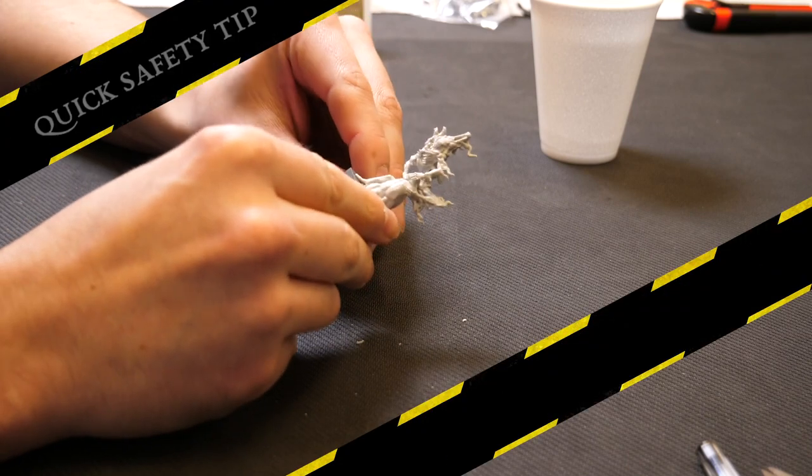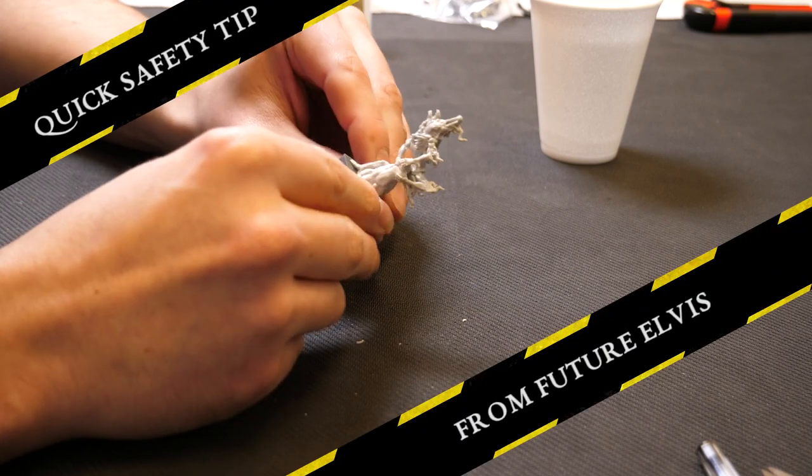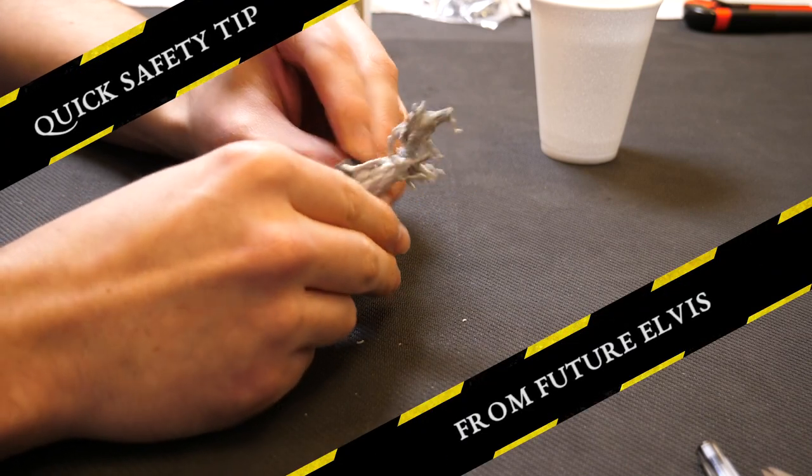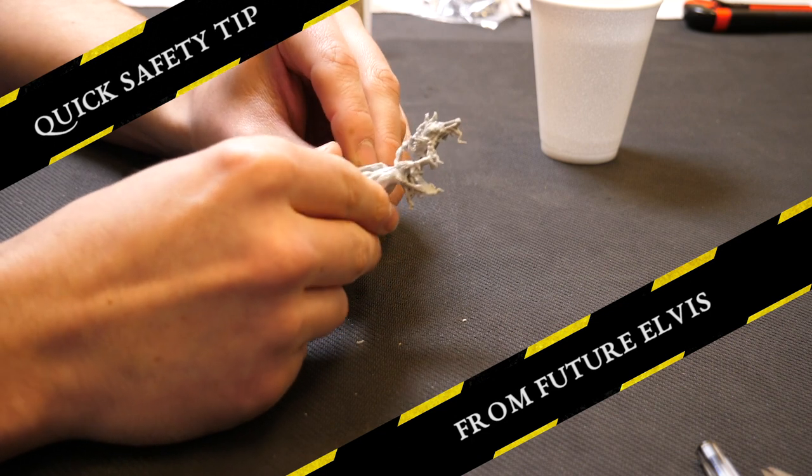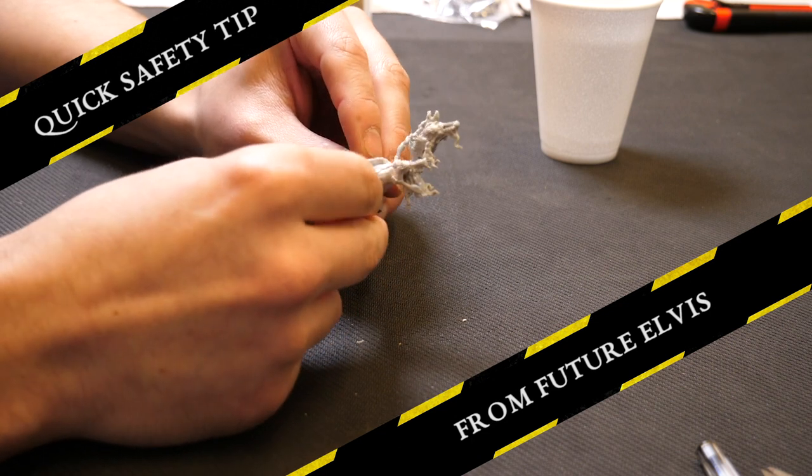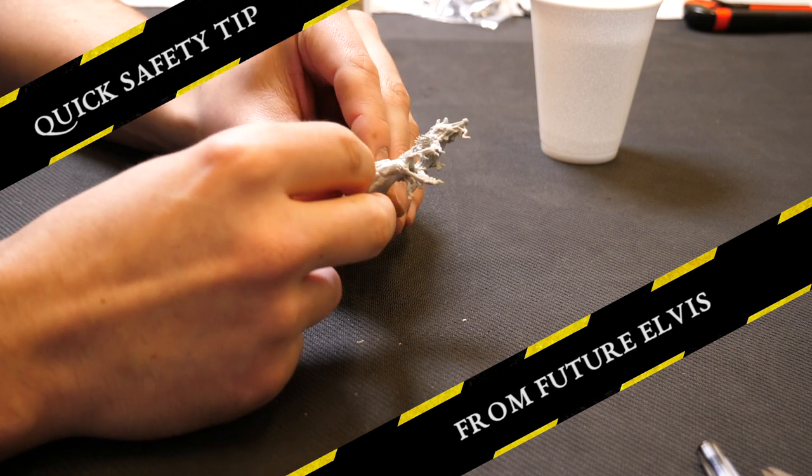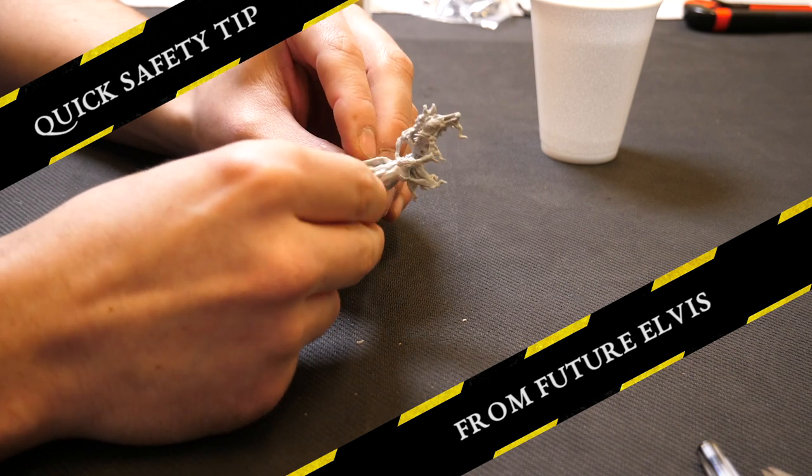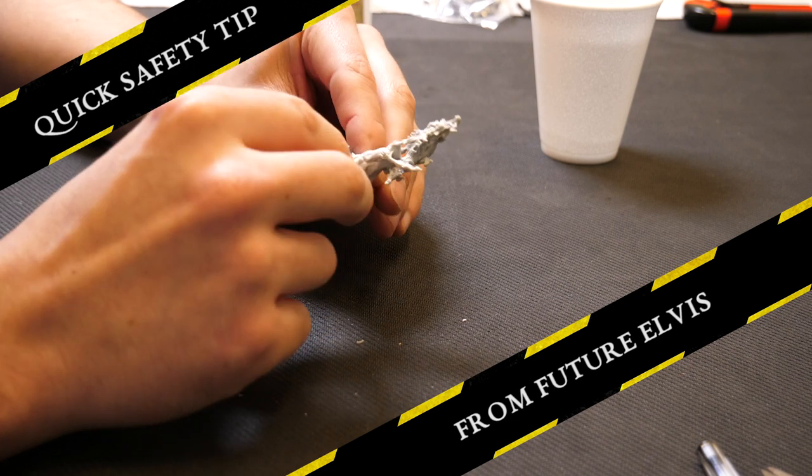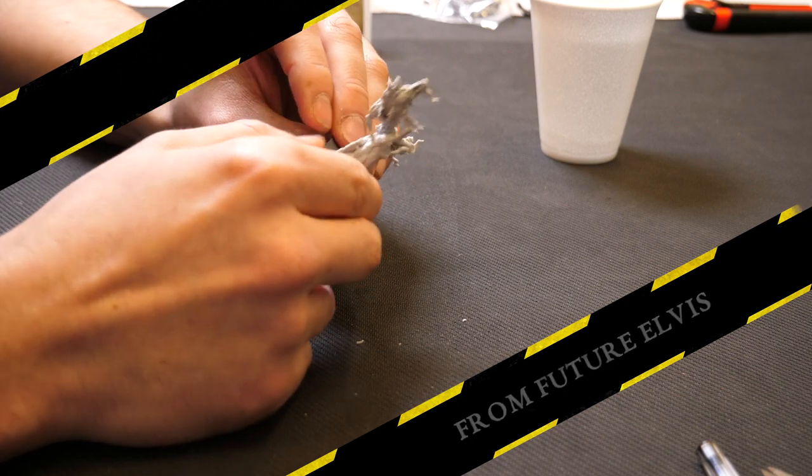A little safety tip for working with resin. The reason why we use the blade is that you always want to cut the resin off. You never want to sand it down. When you sand it, it goes into a fine powder and you can breathe it in. It can be very bad for you. So just make sure that you always cut and never sand.